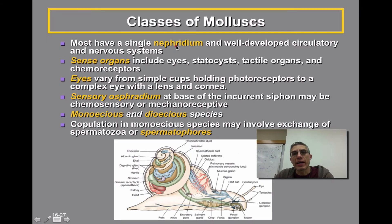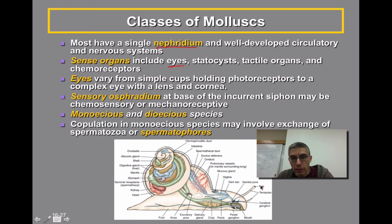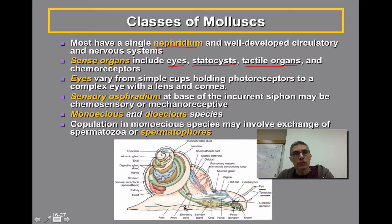Most will have a single nephridium — the nephridium is sort of like the kidney of the animal. They have a pretty well-developed circulatory system and nervous system. The sense organs of these animals do include eyes; you can see the eye stalks located right here towards the bottom. They have statocysts, which are responsible for balance in the animal. They also have various tactile organs — tentacles — which tend to be shorter than the eye stalks in the terrestrial gastropods. Even that foot can be pretty heavily laden with sense organs, functioning as a tactile type of organ.